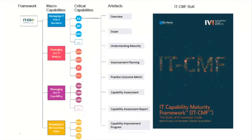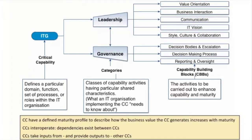Each critical capability has rich supporting documentation, including an overview, categories, CBBs, capability maturity curve, and capability maturity assessment statements, based upon the IT-CMF body of knowledge. Each CC defines a particular domain, function, set of processes, or roles within the IT organization. CCs provide specified descriptions of what an IT organization implementing IT-CMF needs to know. These descriptions are called categories and CBBs.